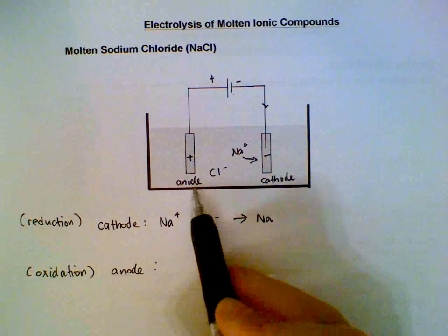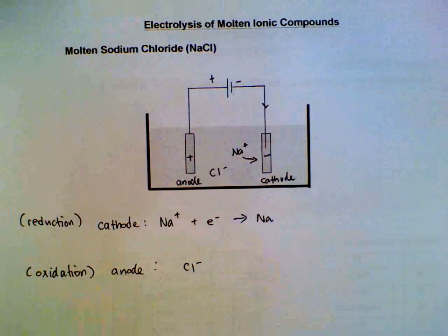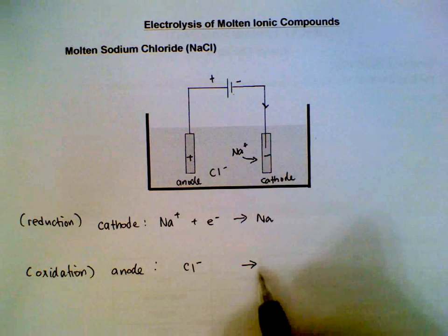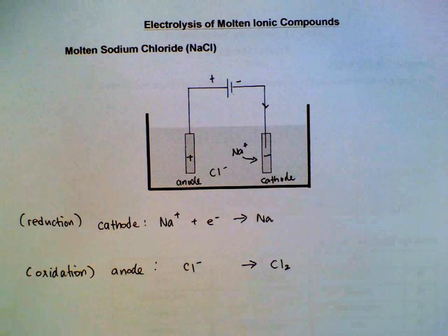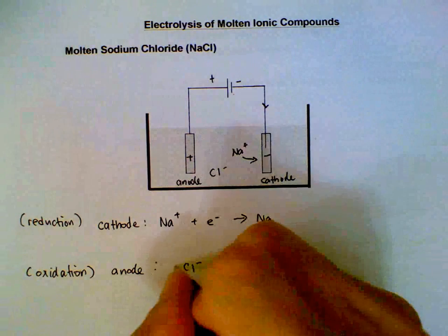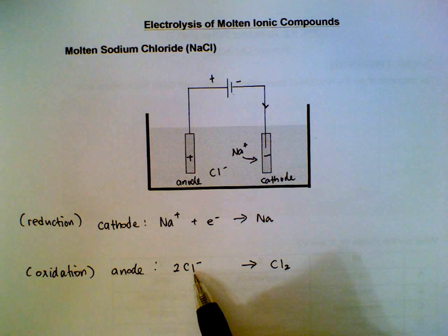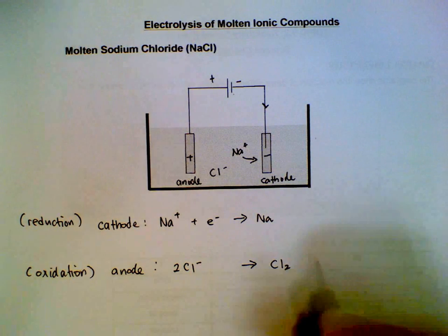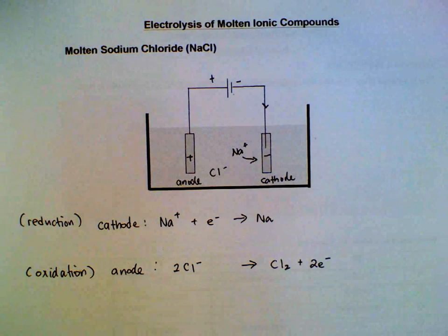The electrode that attracts anions, chloride will be discharged. Here we have to be careful - the stable element under this condition is not a chlorine atom but the diatomic chlorine gas. So we will need to discharge two chloride ions. For the chloride ions to be discharged, they will have to lose two electrons.